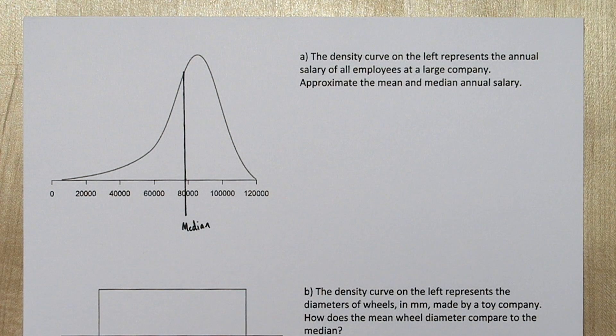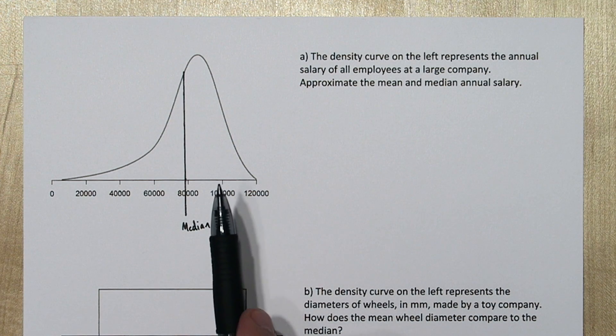Now the mean on a density curve is the balancing point. So if this was an actual physical object, where do you feel it would balance?